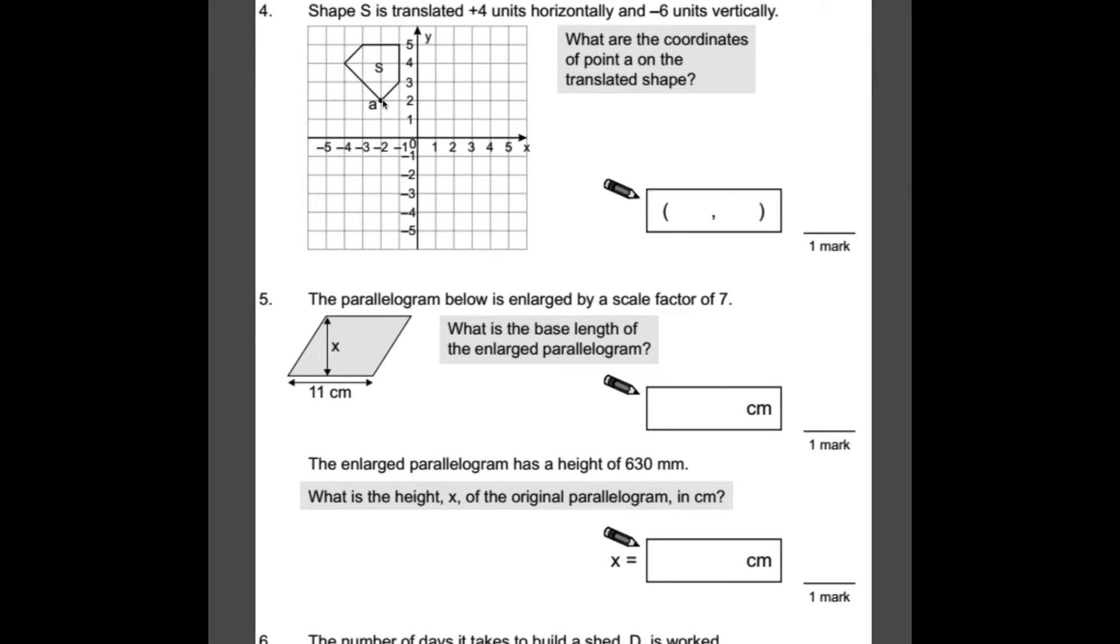First we're going to move it 4 units horizontally. 1, 2, 3, 4. Just hold that for a second. And then minus 6 units vertically. So staying where we are, 1, 2, 3, 4, 5, 6. That would be its new point. So we read off the x-axis, 2, and then the y-axis, minus 4. So 2, minus 4.